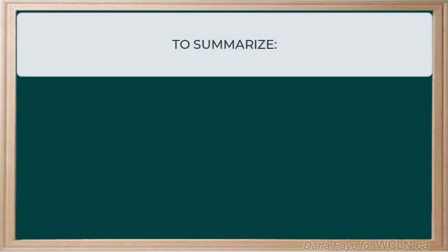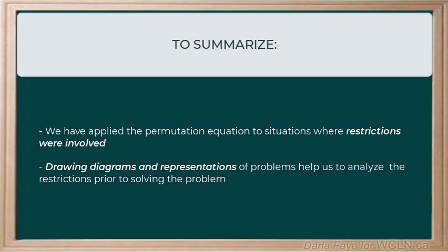Now that we've looked at a few problems, let's summarize what we've learned in this video, part two of permutations with distinguishable objects. We've continued to apply the permutation equation to solve problems where restrictions are involved this time, and drawing diagrams and representations of the problems are key to helping us analyze the restrictions prior to trying to solve the problem.